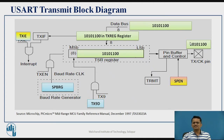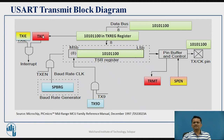Once you load data into TXREG, it goes to the Transmit Shift Register (TSR), where the parallel data is converted into serial data and transmitted on the pin. What actually gets transmitted is a frame — along with the data, a start bit, stop bit, and optionally the 9th bit. Remember that the least significant bit of your data gets transmitted first. To know when transmission is complete, two flag bits are available: TRMT and TXIF. When the transmission shift register is empty, TRMT is set and the TXIF flag bit is also set.